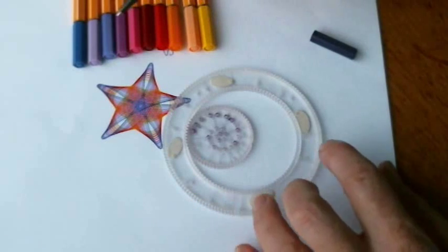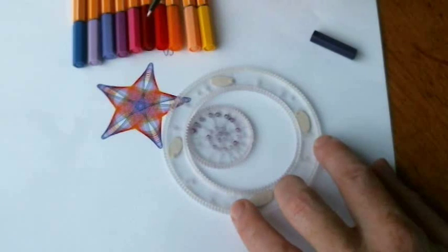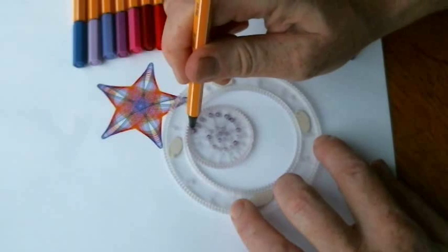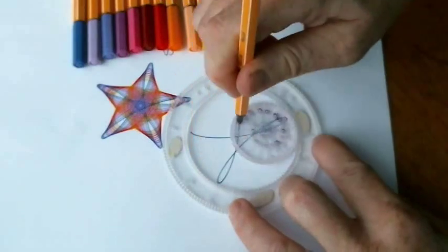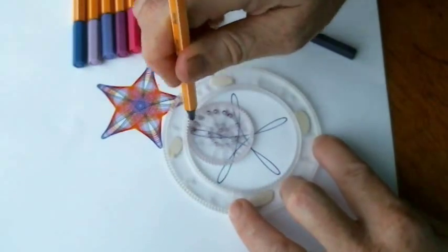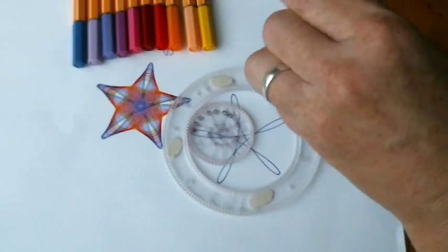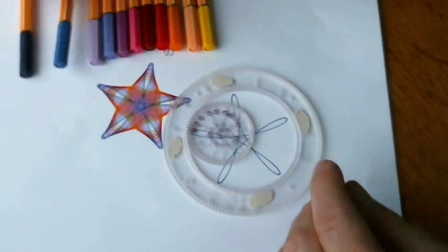I'm going to use the exact same colors, the exact same pens, the Stabilo 0.88, and draw the design again. So hole number 1 lined up with the mark, and change colors as I did in the previous video.